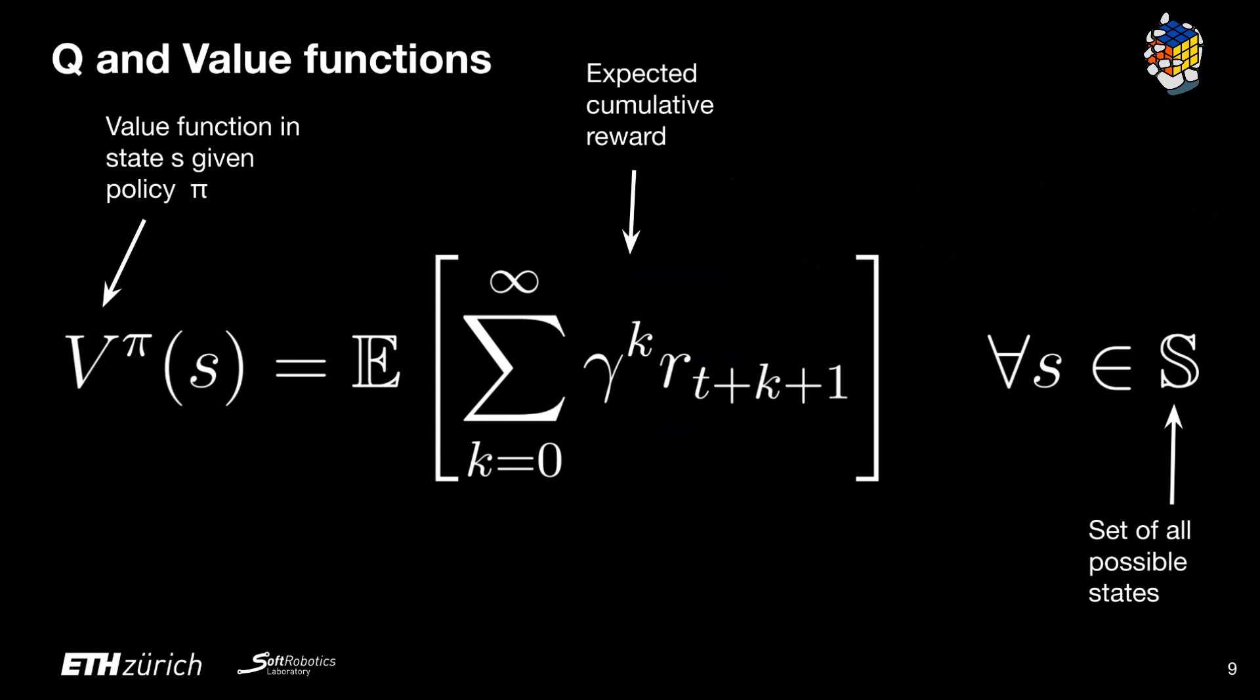While approaching the topic of reinforcement learning, there are two quantities we have to look at more closely: the value function and the Q function. The value function is the expected value of the cumulative reward that the agent would receive in state s. It is a function of the state s that describes how good a state is in terms of expected rewards.